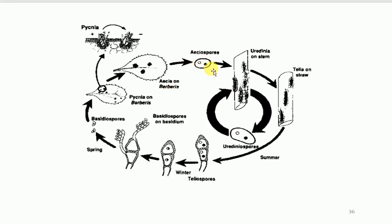The life cycle of Puccinia graminis tritici proceeds as follows: urediniospores form uredinia on the stem, then telia on straw in summer. The teliospores overwinter and the two-celled thick-walled teliospores germinate in spring to produce basidiospores. The life cycle completes in spring when basidiospores enter through the guard cells or stomata of the leaf, beginning the cycle again.